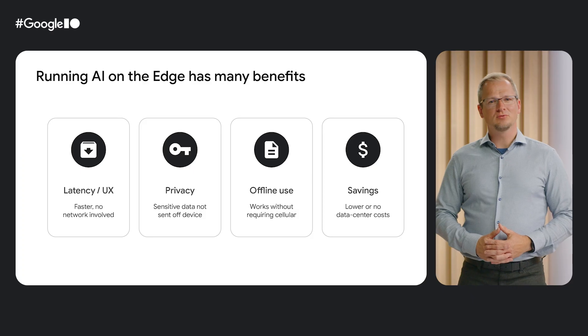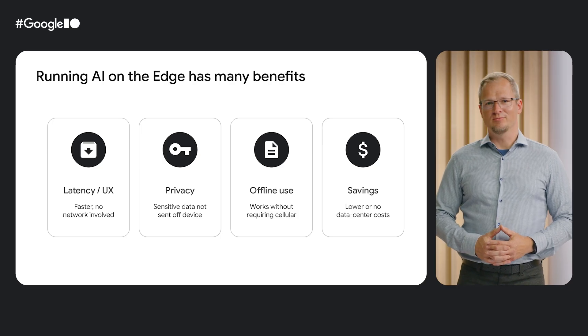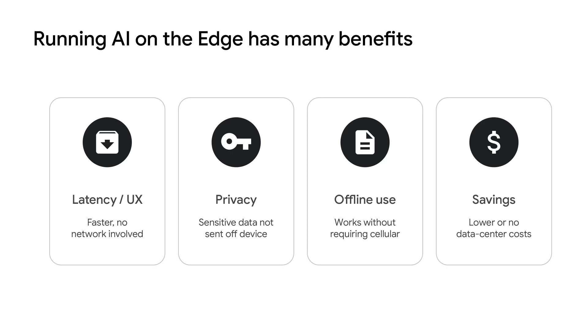Customers often rely on apps where real-time, low-latency processing is absolutely critical — for example, when removing the background in every frame of a video conference stream. Offline use is also highly valuable, enabling users to set timers or reminders via voice without network connectivity. Running ML on the edge offers clear privacy advantages, such as denoising voice messages without the user's data ever leaving the device. And as a developer, you reduce or eliminate the need to deal with server-side maintenance, capacity constraints, or inference costs.